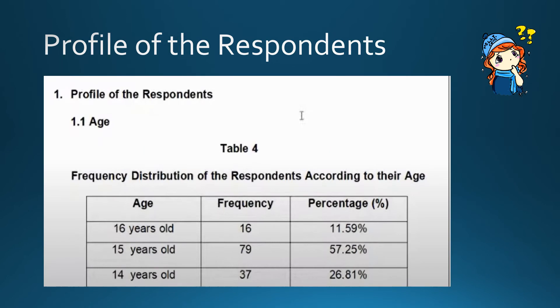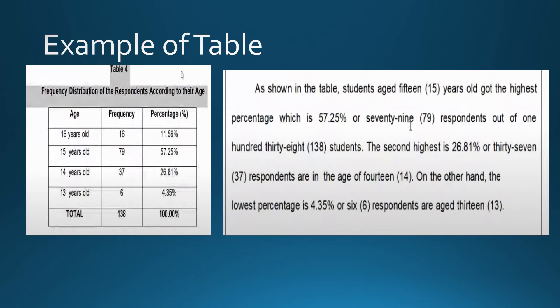Profile of the Respondents. Example of table. On the other hand, the lowest percentage is 4.35% or 6 respondents are age 13.